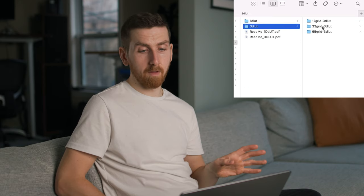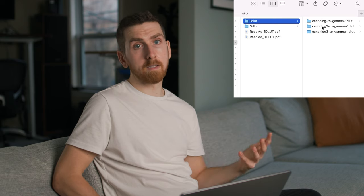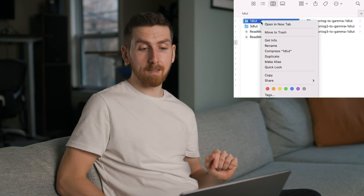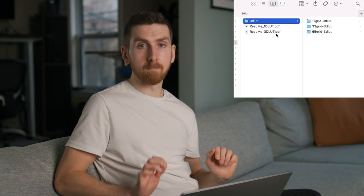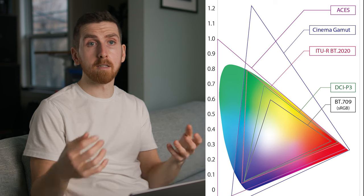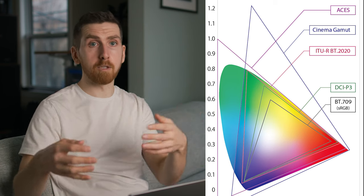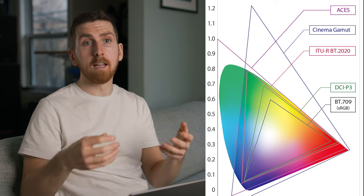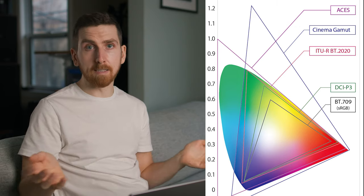First off, you have 3D and 1D LUTs. You can take the 1D LUTs and delete them. 1D LUTs only deal with brightness and contrast, not with color information. And when you're shooting in a wide color space like Canon Cinema Gamut, which you probably are if you need to use one of these LUTs, then 1D is just blatantly insufficient.